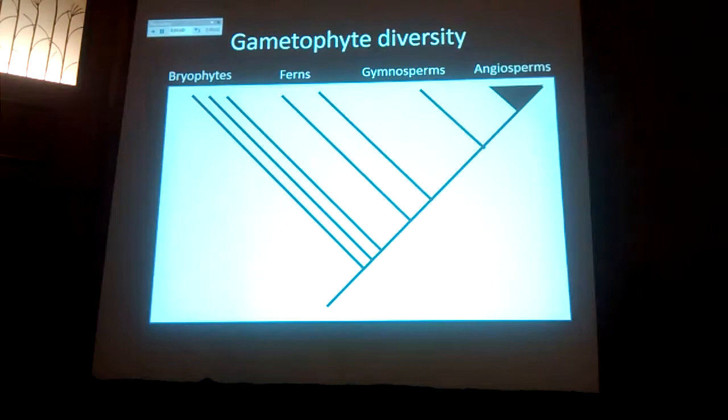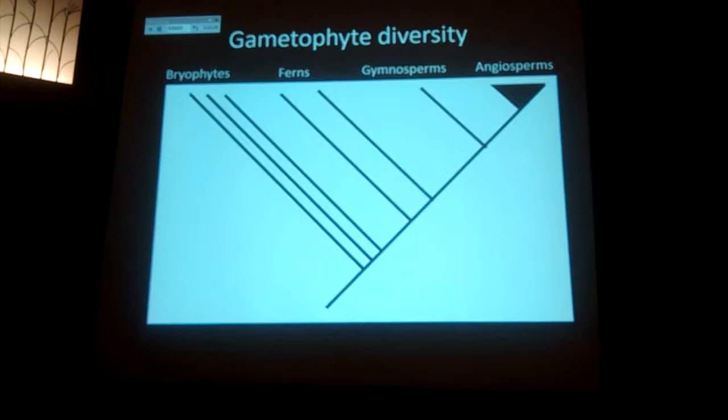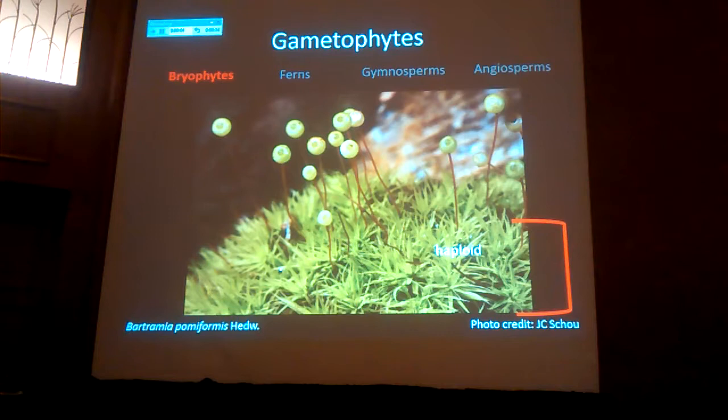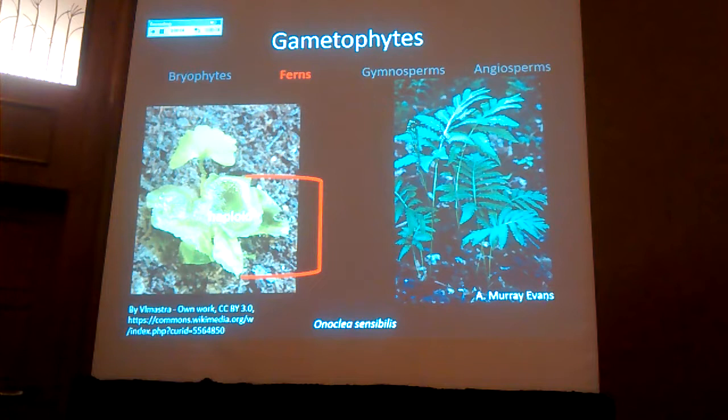I'm going to quickly run through male gametophyte diversity in land plants. First, in bryophytes, you can see that the haploid gametophyte generation is really the dominant photosynthetic generation, and you can see the sporophytes going on. In ferns, the haploid generation is still free-living and photosynthetic, but it's much less dominant than the sporophyte generation, which is the main one that we tend to see.